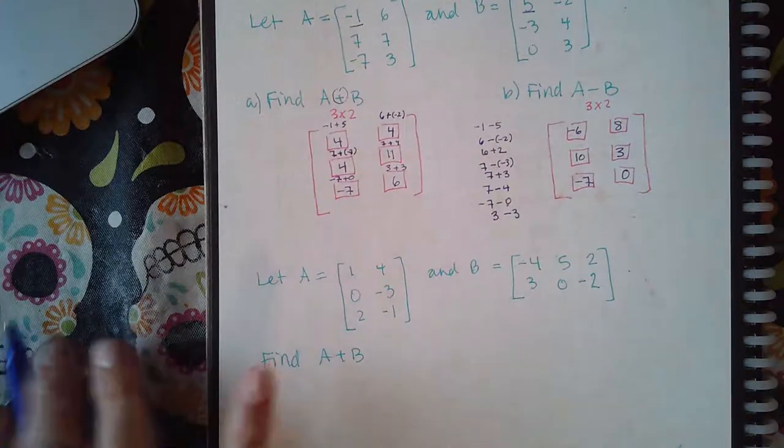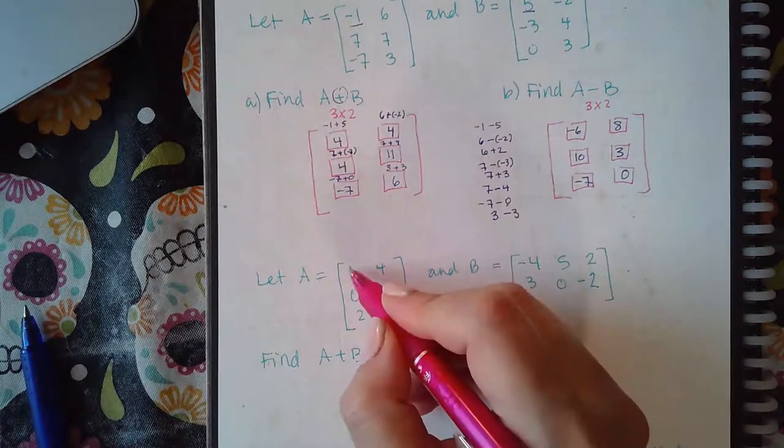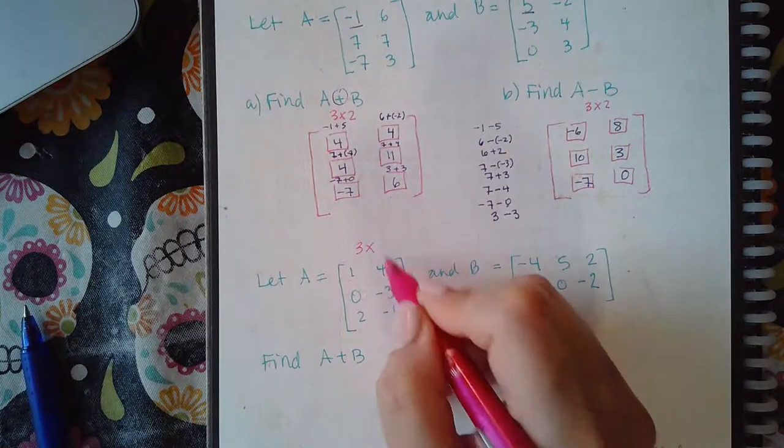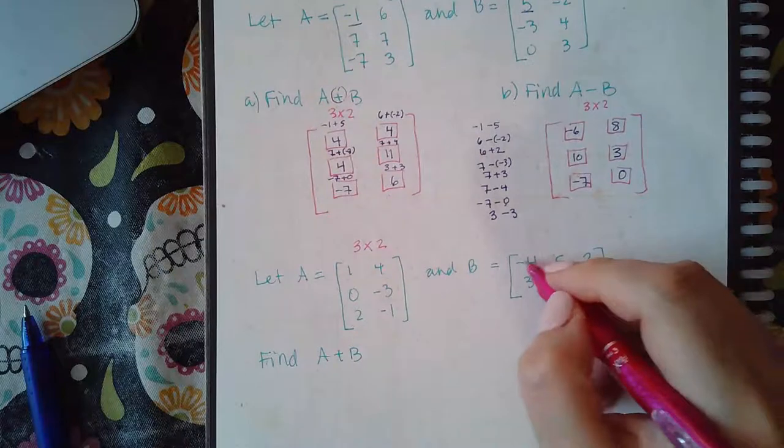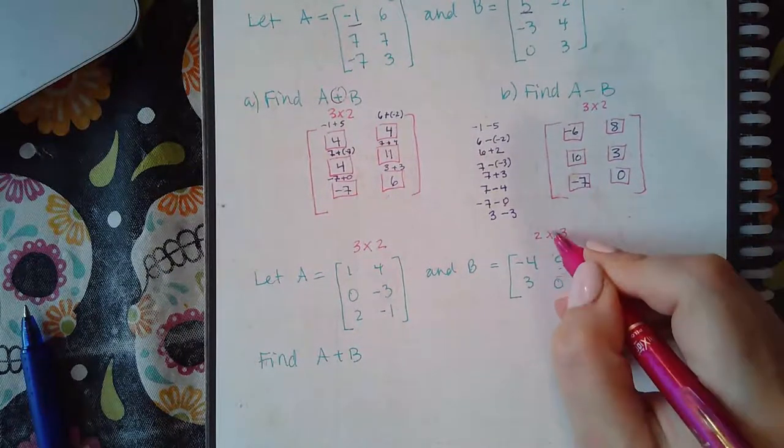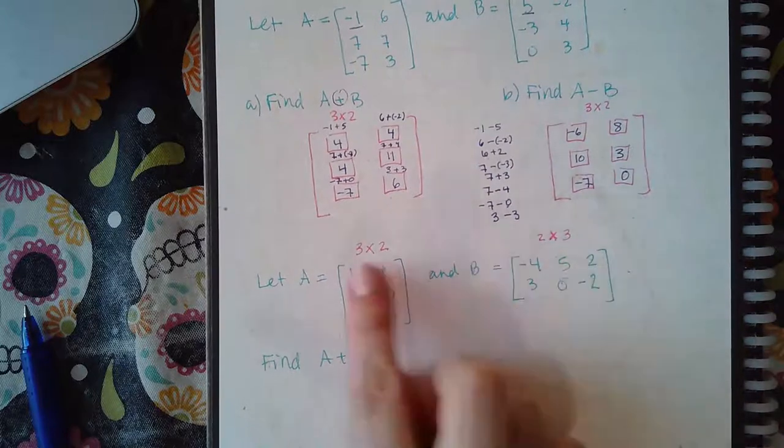Now, let's write down the sides. So, this is one, two, three rows by two columns. This one is two rows by three columns. These are not the same dimensions.